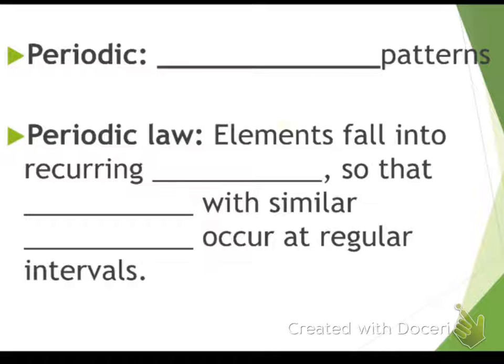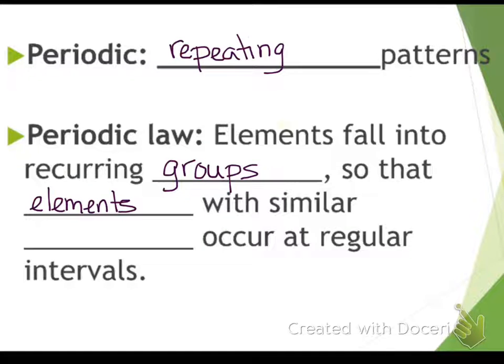Simple basic definitions. Periodic means repeating patterns. The periodic table was invented based on the idea that elements have physical and chemical properties that repeat in intervals, which gave us the periodic law. Elements fall into recurring groups, and each element has similar properties that occur at regular intervals.